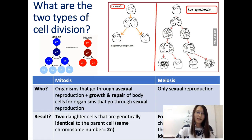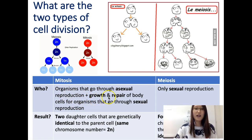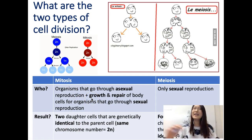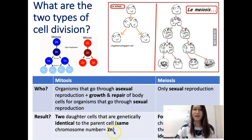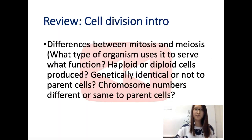Mitosis is used for asexual reproduction, and for growth and repair of somatic cells. The result is two daughter cells identical to the parent, all 2N. Meiosis is only for sexual reproduction — it produces four gametes that are non-identical to the parents and have half the chromosomes, 1N.